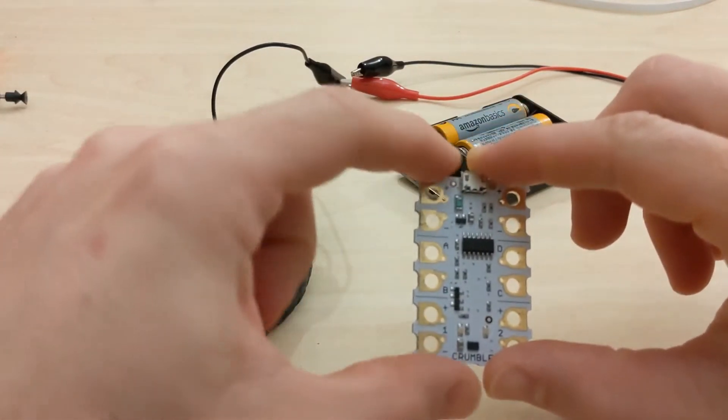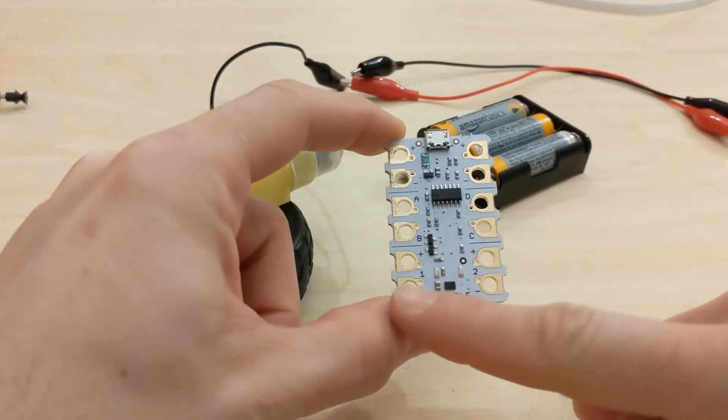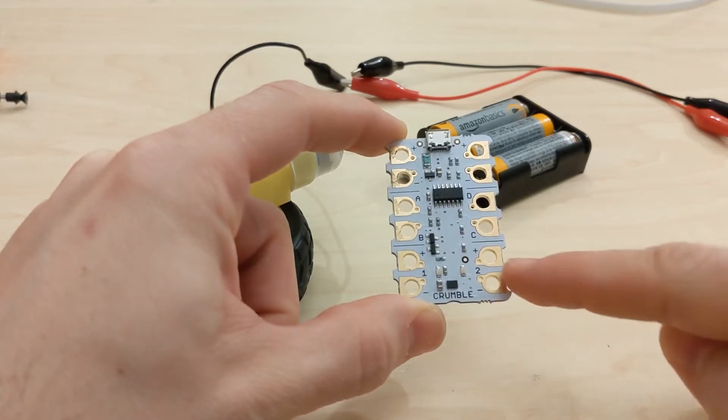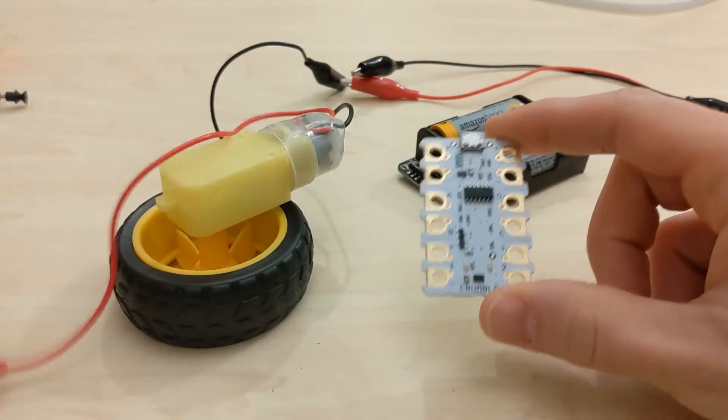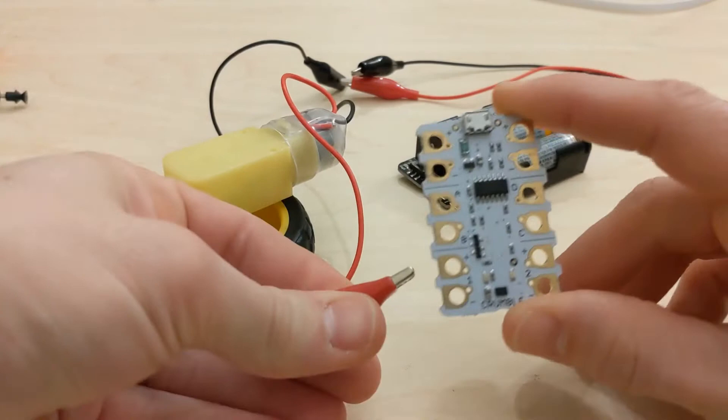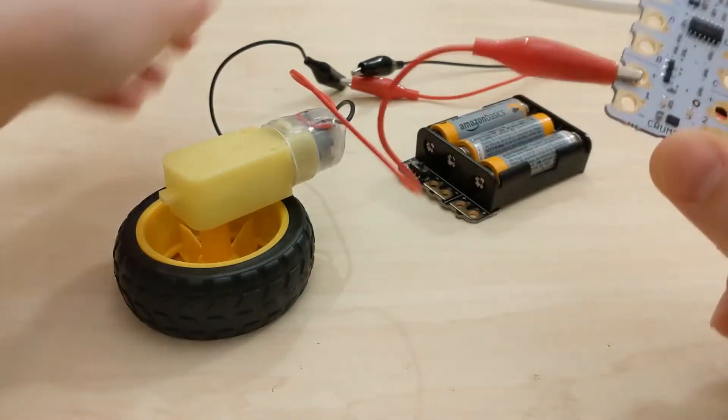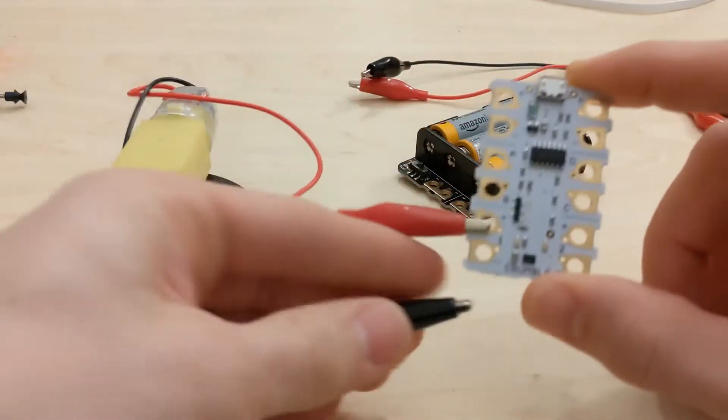On the crumble board you can control up to two motors. You've got number one and two down the bottom with positive and negative terminals. The red wire of the motor goes on to the positive terminal and the black wire goes on to the negative terminal.